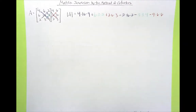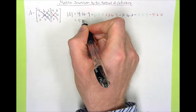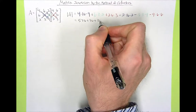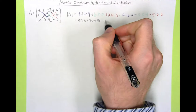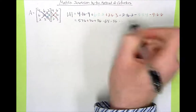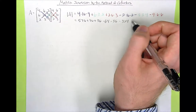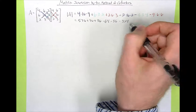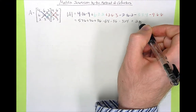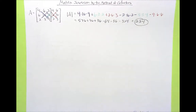Reducing that down, we get 576 plus 36 plus 36, minus 64, minus 36, minus 324, which equals 224.